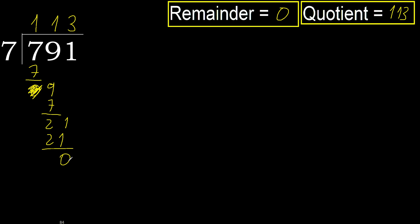Remainder is 0. Therefore, 791 divided by 7 equals 113.